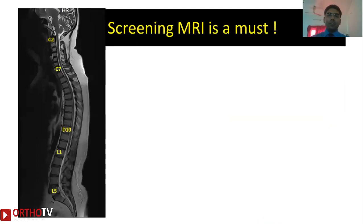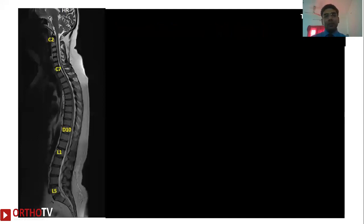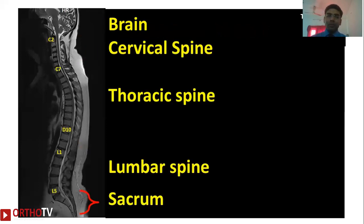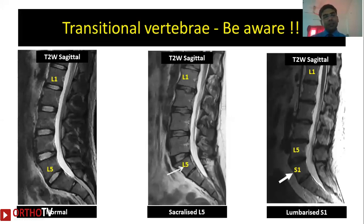The first MRI film we should see is a screening MRI, and one should make a habit of ordering a screening MRI whenever ordering an MRI of a particular region — this will prevent missing any pathologies above or below the region of interest. On a screening MRI, which is a T2-weighted sagittal image, you can see the lower portion of the brain, cervical spine, thoracic spine, and lumbar spine. Two points to note: counting is always done from the top in an MRI, and the spinal cord usually ends at the lower border of L1.